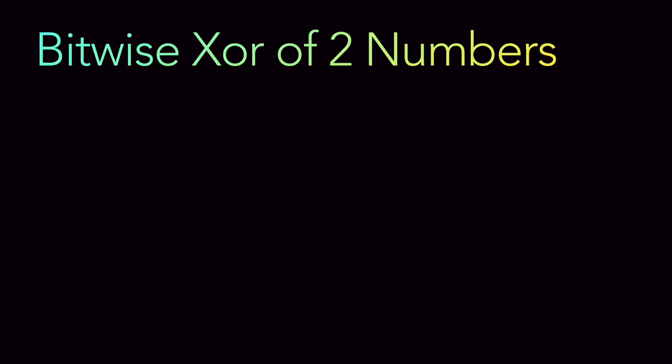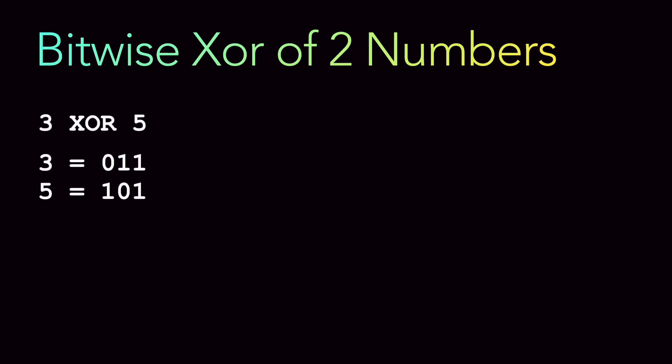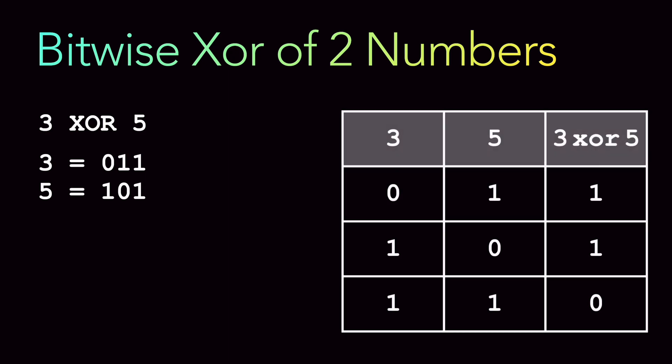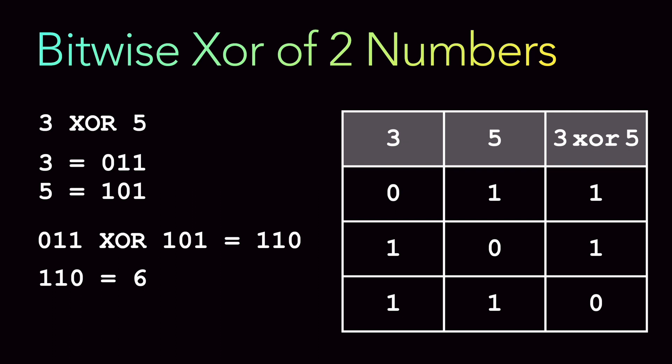Let's see how bitwise XOR of two numbers works. If you do 3 XOR 5: 3 in binary is 011, and 5 in binary is 101. Doing the XOR bit by bit — first row 0 and 1 are different so result is 1, second row 1 and 0 are different so result is 1, last row 1 and 1 are the same so result is 0. So 011 XOR 101 gives 110, which is 6 in decimal.